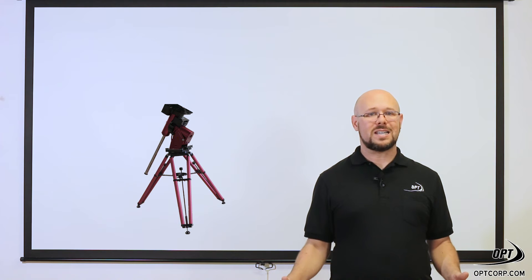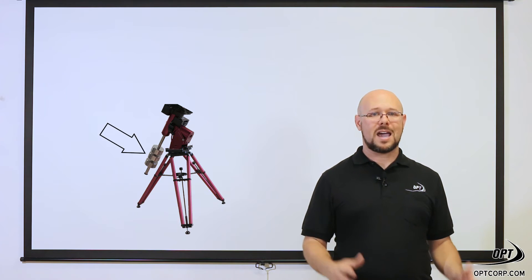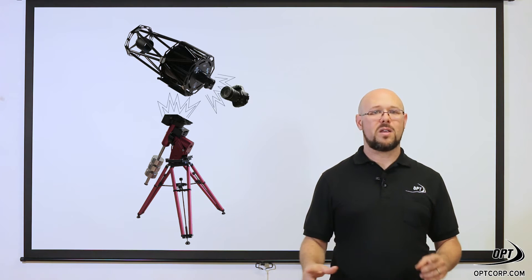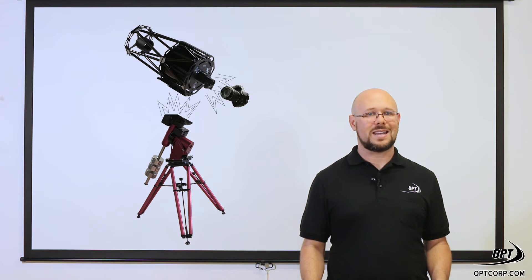For that reason you always want to put the counterweights on before you put the telescope on, and the telescope and camera are the first thing that comes off when you're breaking down.